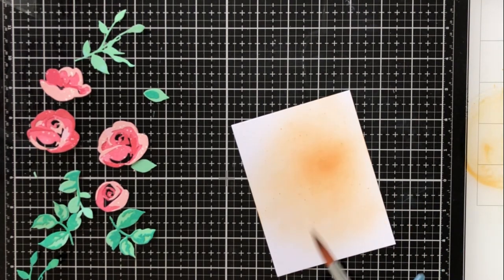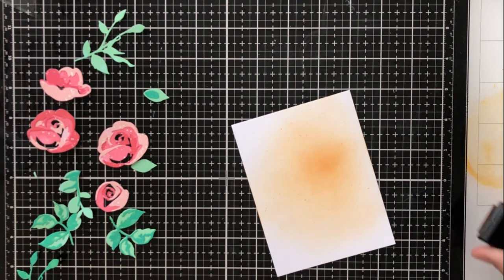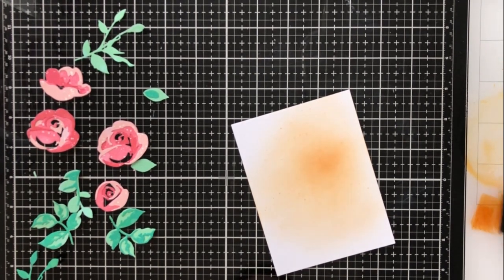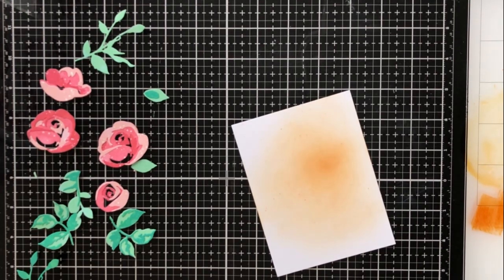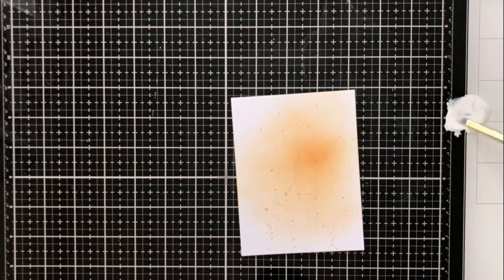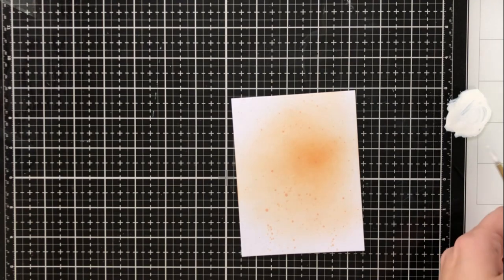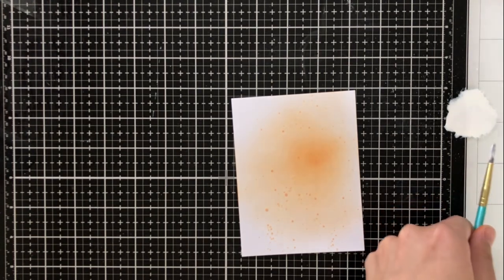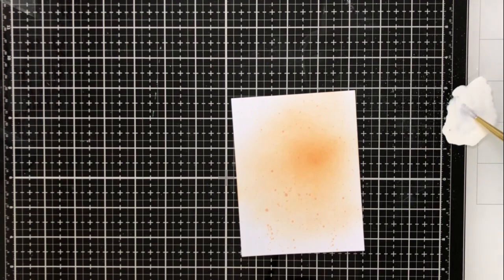So to add some splatters what I'm going to do is actually just take that caramel toffee mini ink cube and smush it there right on my glass mat. I'm going to add some water to that and pick it up with a damp big round brush paintbrush and then I'm going to do some more splatters onto my card front. This is really going to keep that cohesion of the watercolor look and then just to add a little bit more cohesion I'm going to use some white gouache again.